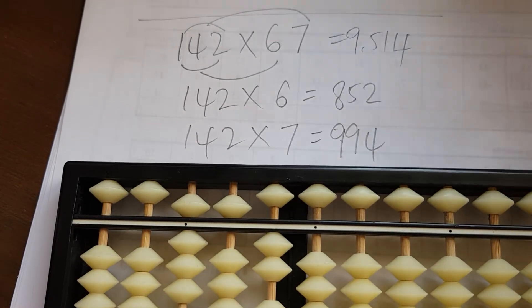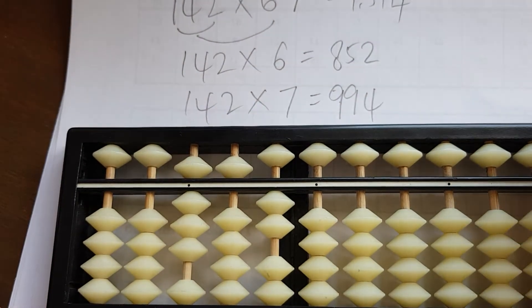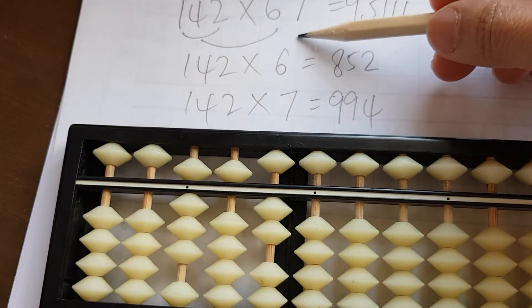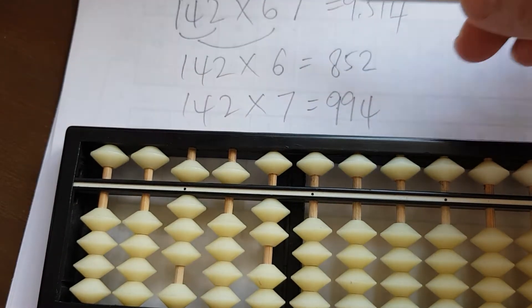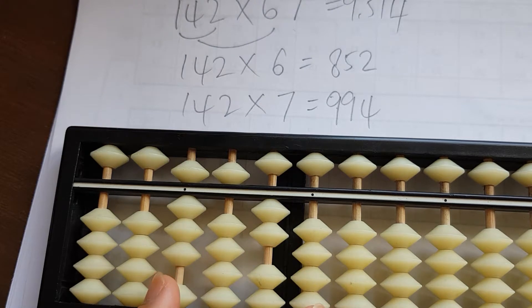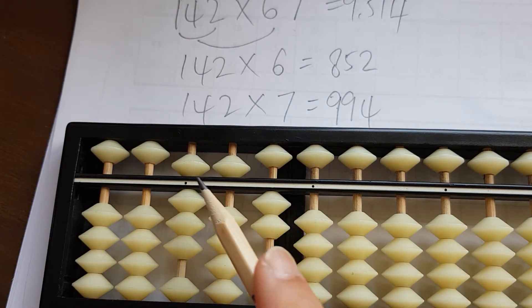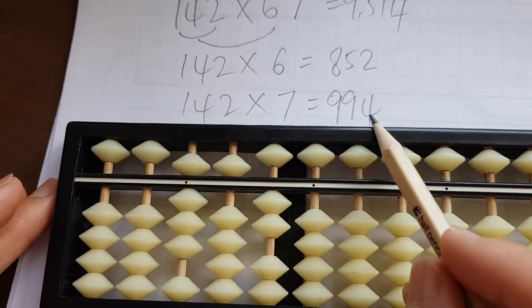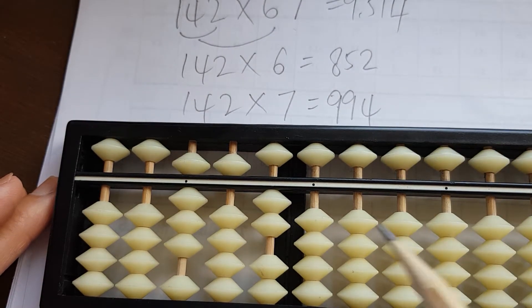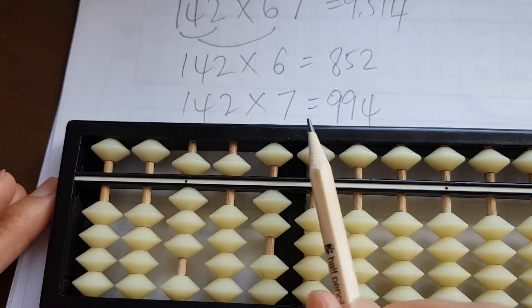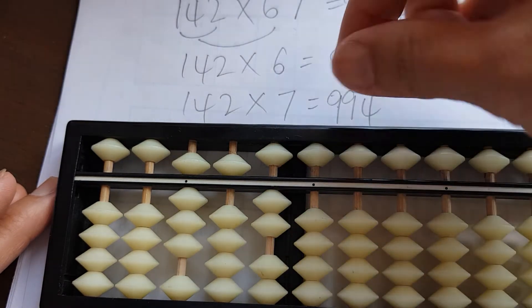The next set of multiplication is 142 times 7, which equals 994. Because we're moving the column, our answer is going to be from here to there. Because the answer is 994, we need to put 9 here on the 100, a 9 here, and then 4 here.